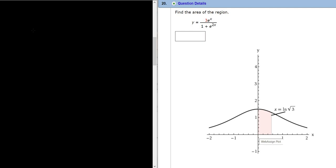So we have the definite integral from 0 to natural log square root of 3 of this function: 3e^x over 1 plus e^(2x) dx.